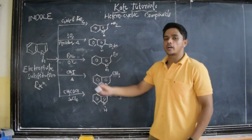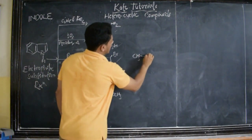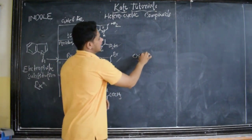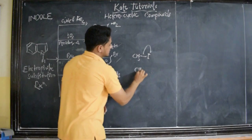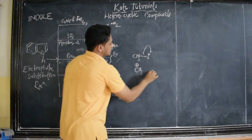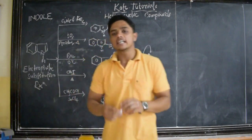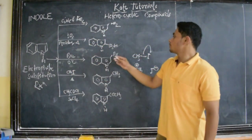Here it is methyl iodide. The beauty of methyl iodide is, CH3I - the iodine is more electronegative, so the electron density shifts towards this iodine. The CH3 gets positive charge and iodine gets negative charge. So this CH3I acts as an electrophile and is going to attack this indole to form this compound.